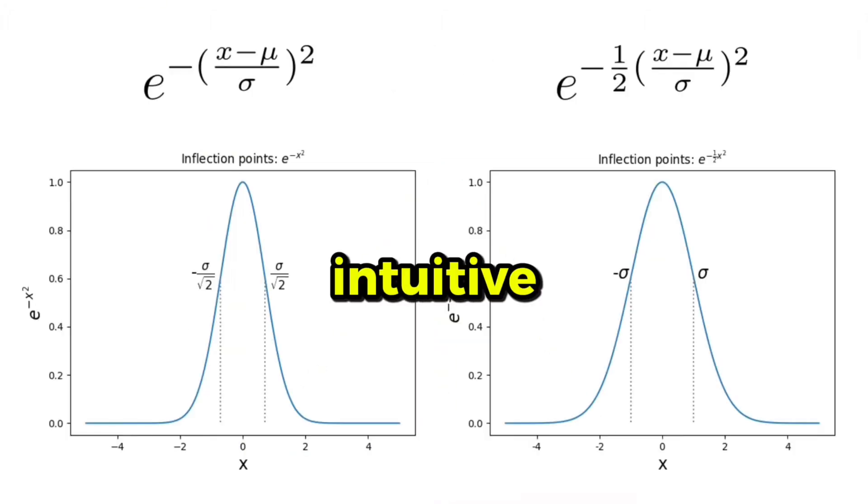Another not so intuitive part, at least not for me, is to multiply the exponent with 1 over 2.